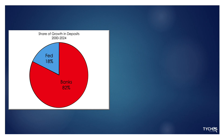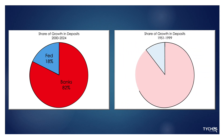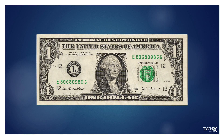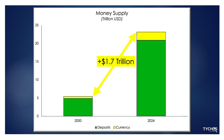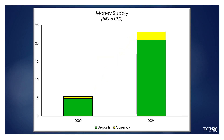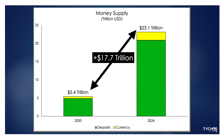In periods before 2000, the bank's percentage of money created hovered around 90%. In addition, the Fed also issues currency through the banking system, held most often directly by households and businesses. Currency is a liability of the Federal Reserve and an asset held by the public. From 2000 to 2024, currency in circulation increased by about $1.7 trillion, bringing the total growth in money — deposits plus currency — to roughly $17.7 trillion.